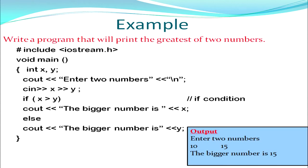There is an example here printing the greatest of two numbers. Two numbers are accepted from the user and stored in variables x and y. If x is greater than y, 'the bigger number is x' is displayed — the if condition. Otherwise the else block executes and displays 'the bigger number is y.' The output shows two numbers entered: 10 and 15. The larger number 15 is displayed because the condition '10 greater than 15' is false, so the statement following the else keyword is executed.